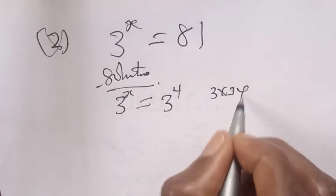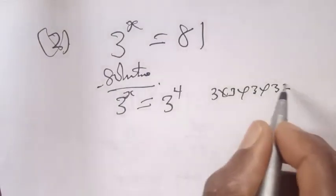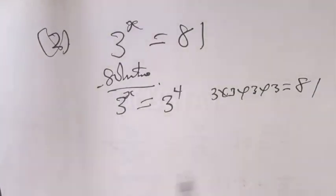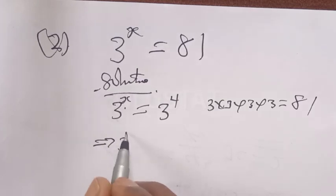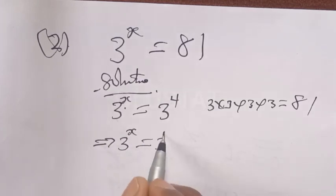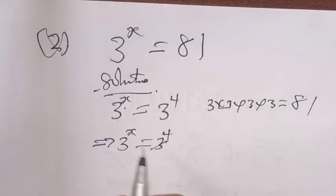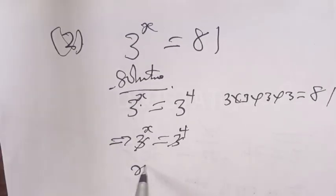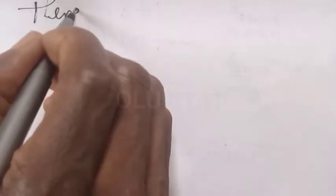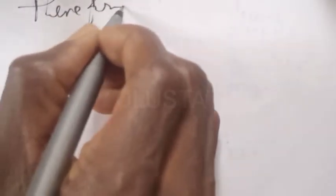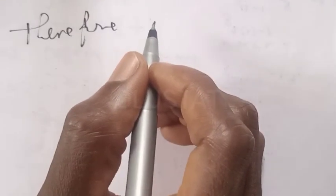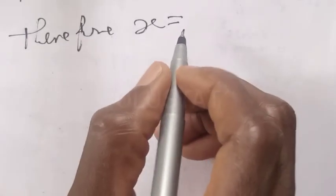That is, 3 times 3 times 3 times 3 equals 81. Since both sides have the same base of 3, we cancel the bases and s is equal to 4. Therefore, s is equal to 4 is the final answer.